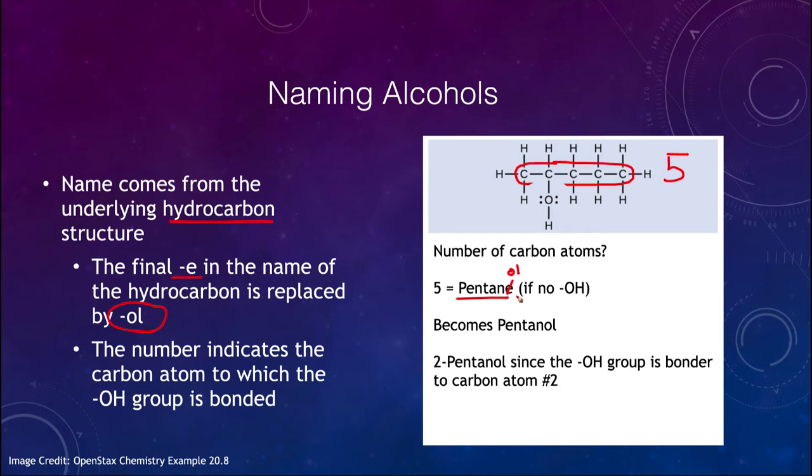So with five carbons we would have pentanol. And the number indicates the carbon atom to which the group is bonded. So it's carbon atom number two in this case, if we're counting here, one, two. This is carbon atom number two is the one that has the OH group here. So it would be 2-pentanol. And depending on what that number could change, depending on which carbon, which of the five carbon atoms the OH group is bonded to.